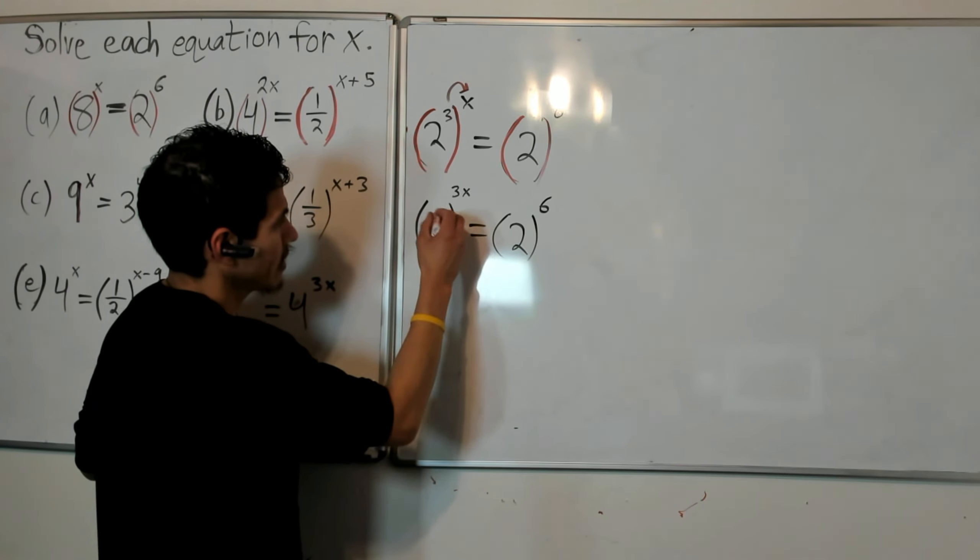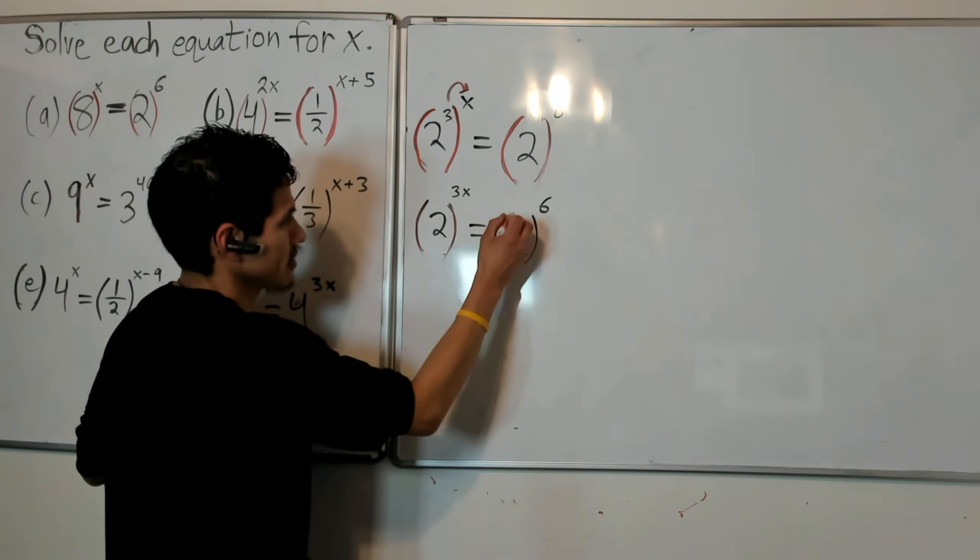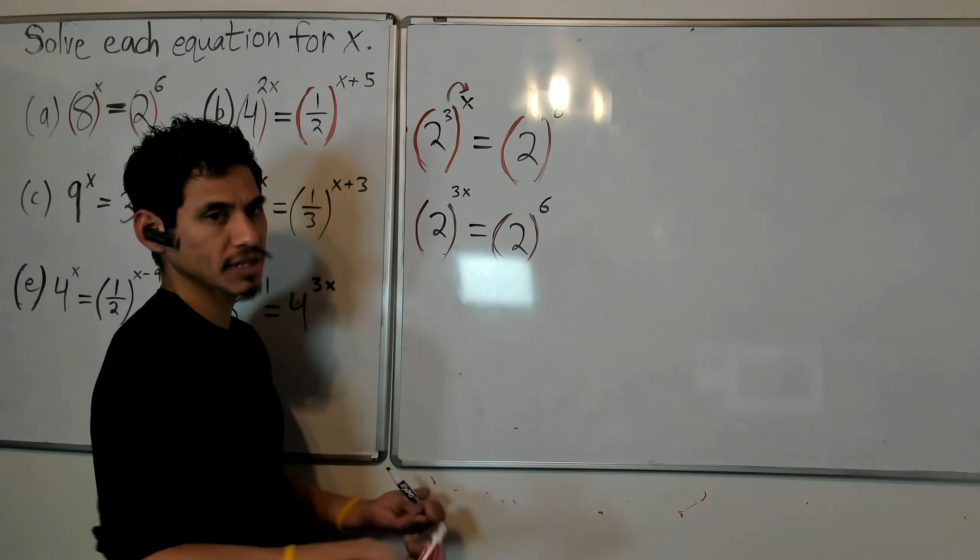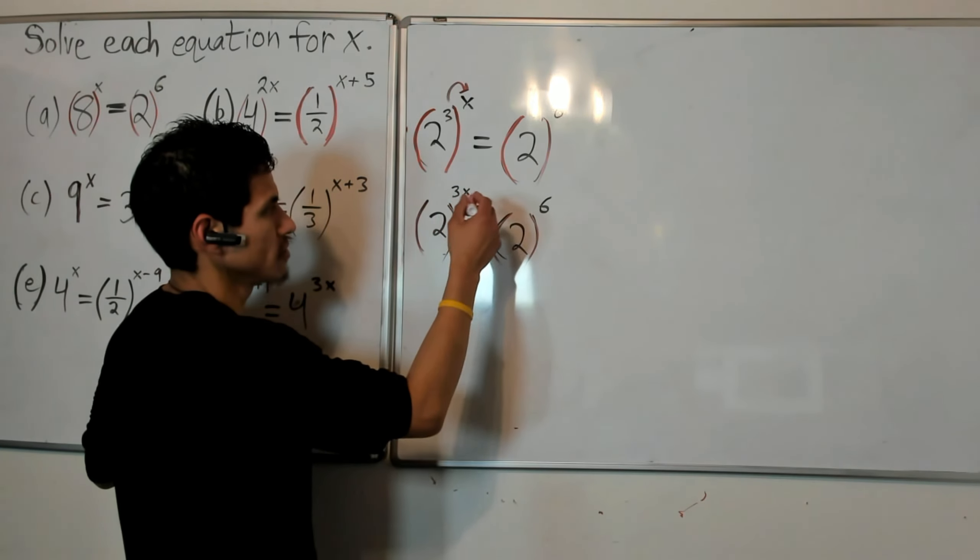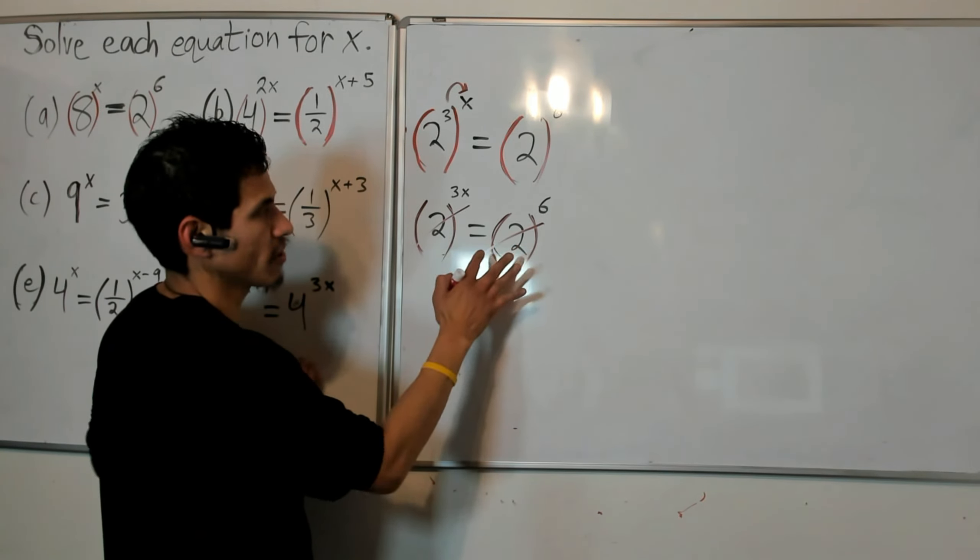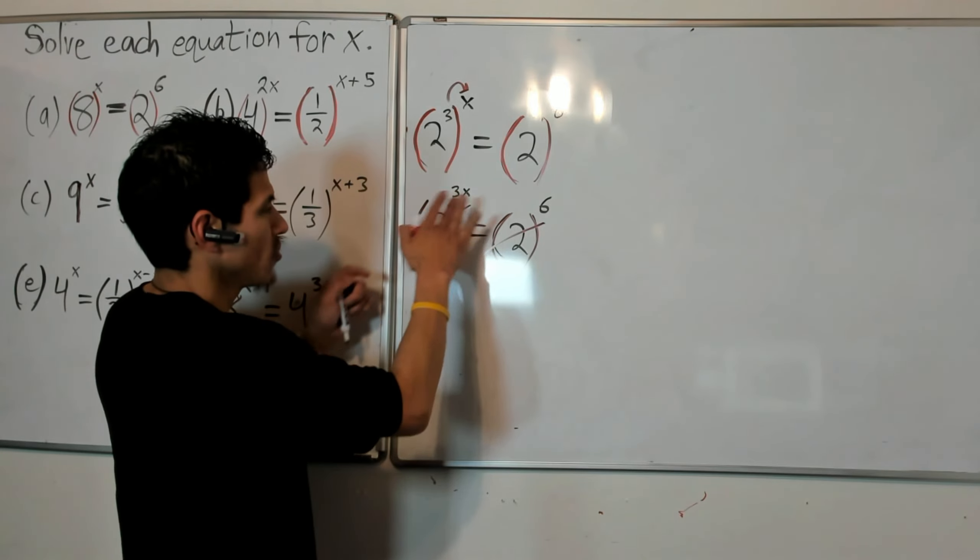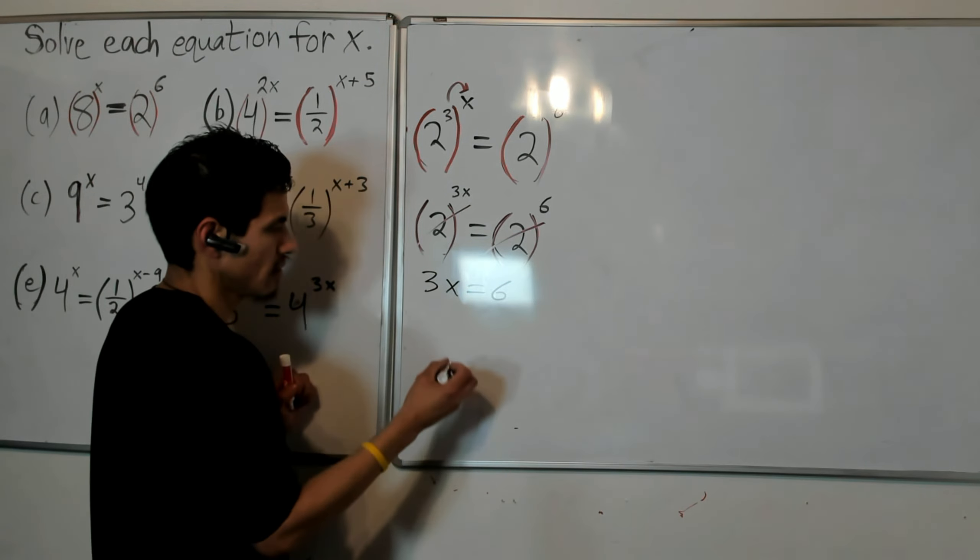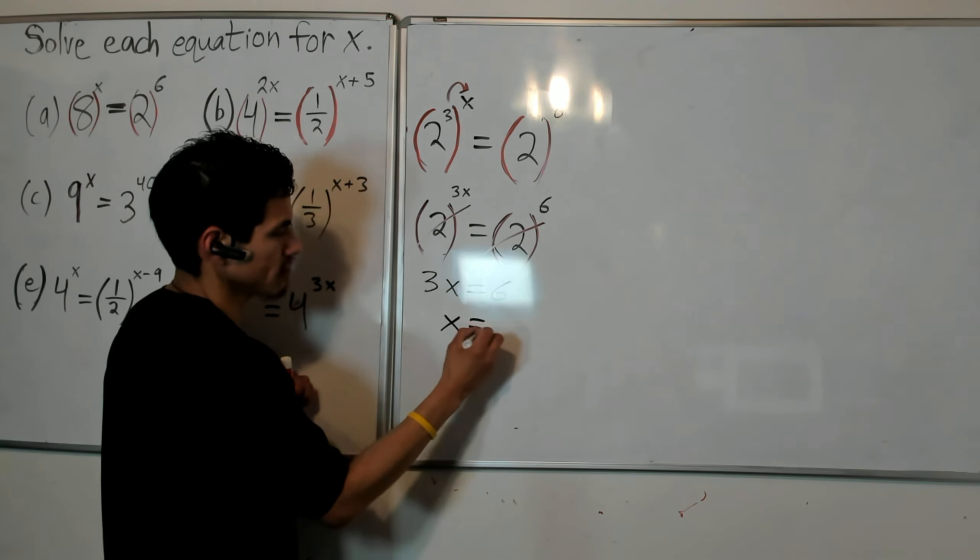And see, now I have the twos isolated on each side, so I can just ignore them because they don't matter anymore. What I really need to figure out is 3x equals 6, and then I know that x will be 2.